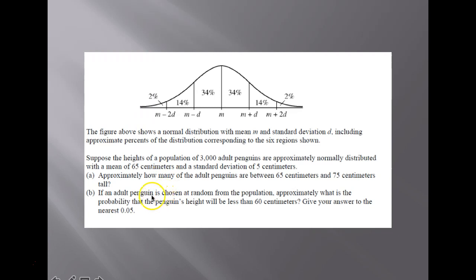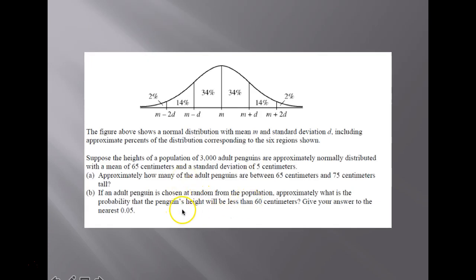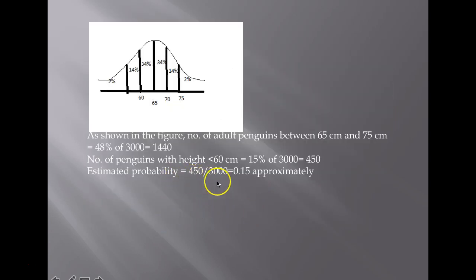For the second part: if an adult penguin is chosen at random, approximately what is the probability that its height will be less than 60 cm, to the nearest 0.05? The mean is 65 and one standard deviation below the mean is 60. The number of penguins with height less than 60 cm covers the 2% region (two standard deviations below) and the 14% region, approximately 2% plus 13% equals 15% of 3,000, which is 450. The estimated probability is 450 divided by 3,000, which is approximately 0.15.